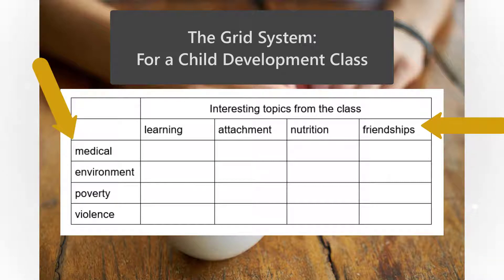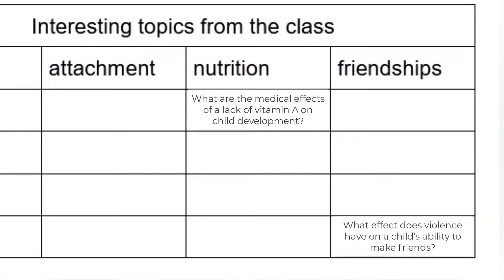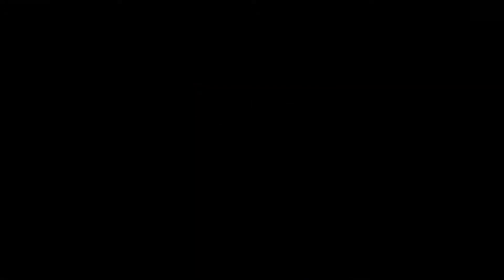As you can see, not every intersection will work well, but most will, and you can get interesting questions. Narrow it down even further by adding in an age bracket or something else, and you have a great list of research paper topics to choose from.